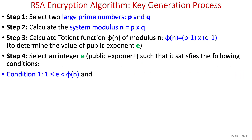In step four, we select an integer e, which is the public exponent of the public key in RSA. It must satisfy two conditions: first, it should be greater than 1 and smaller than phi(n); and second, it should be co-prime to phi(n).